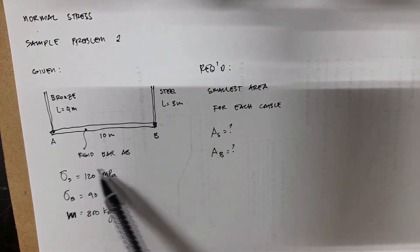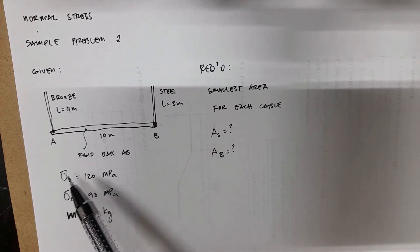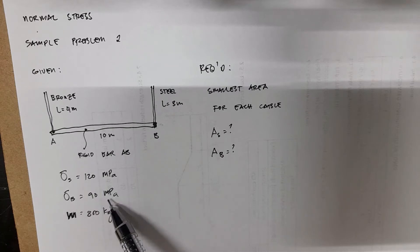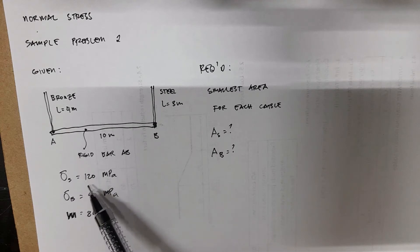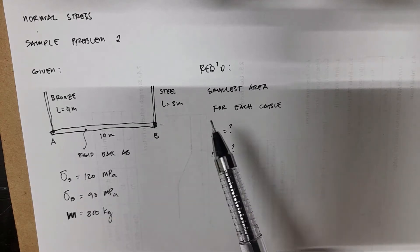We're given with the following data. The limiting stress for steel, sigma S, is 120 MPa. For bronze, we have 19 MPa. So notice the difference - steel has higher strength compared to bronze. That's why we have a greater limiting stress here for steel compared to bronze.